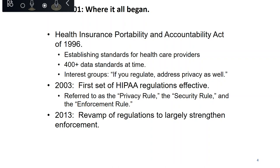Some interest groups stepped in and said that if the federal government is going to regulate these data exchanges, they also wanted privacy addressed to make sure those exchanges are secure. The law required the Secretary of HHS to put in place administrative regulations. Our first set of regulations came out of HHS in 2003, and they come in three flavors: the privacy rule, the security rule, and the enforcement rule. These were significantly strengthened in 2013.